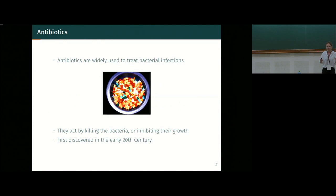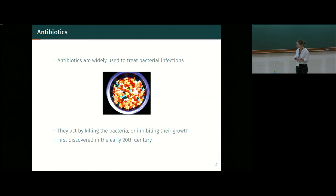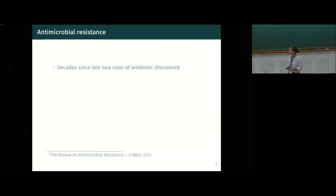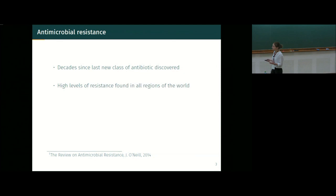Antibiotics generally work either by directly killing bacteria or inhibiting their growth, and we've had them for around 100 years. In general they are very successful, but antimicrobial resistance is a huge problem — not least because it's been a long time since we actually discovered new classes of antibiotics. In the past we had lots of new antibiotics coming onto the market regularly, but that has stopped.